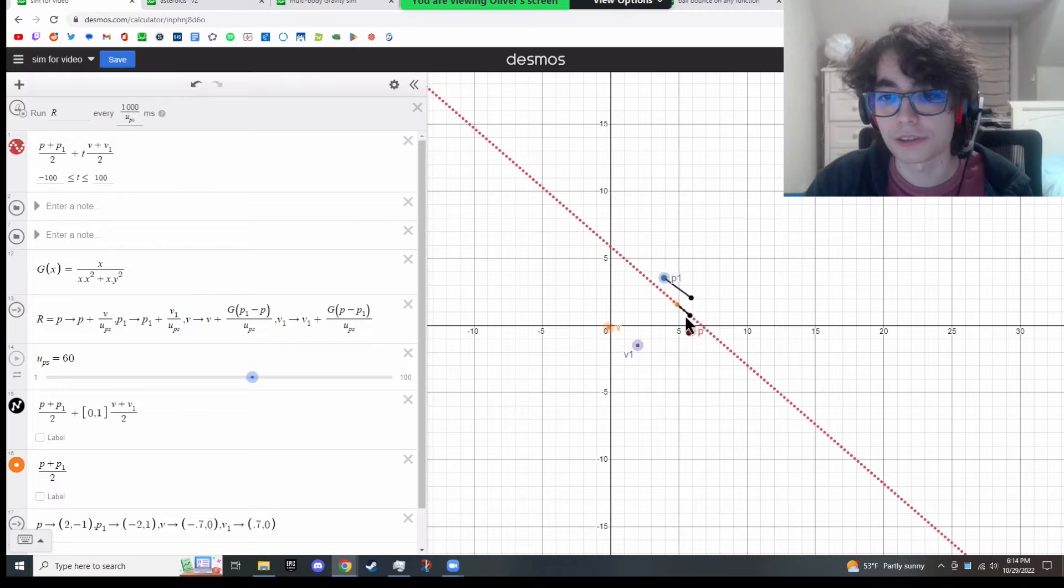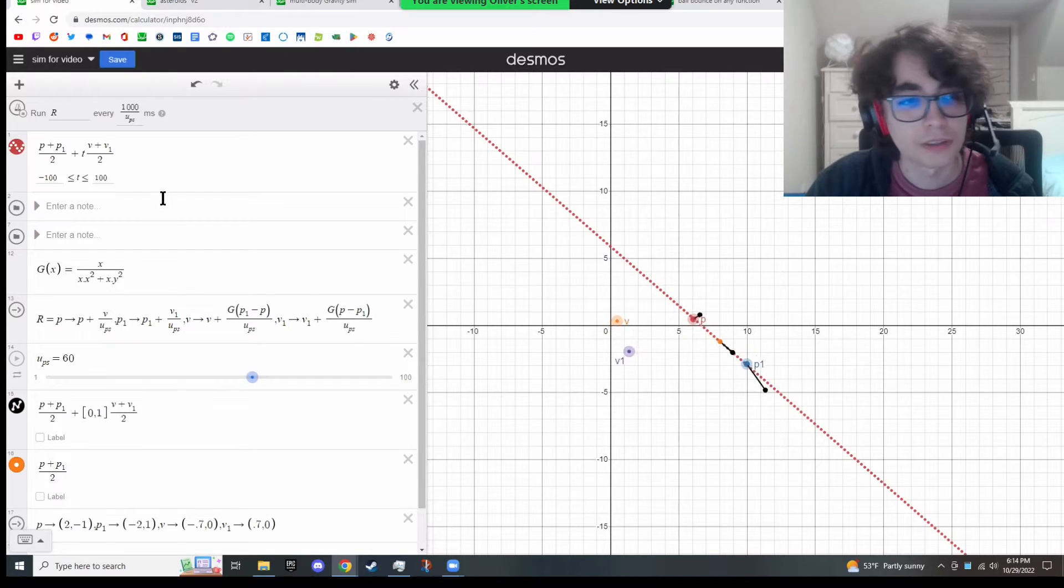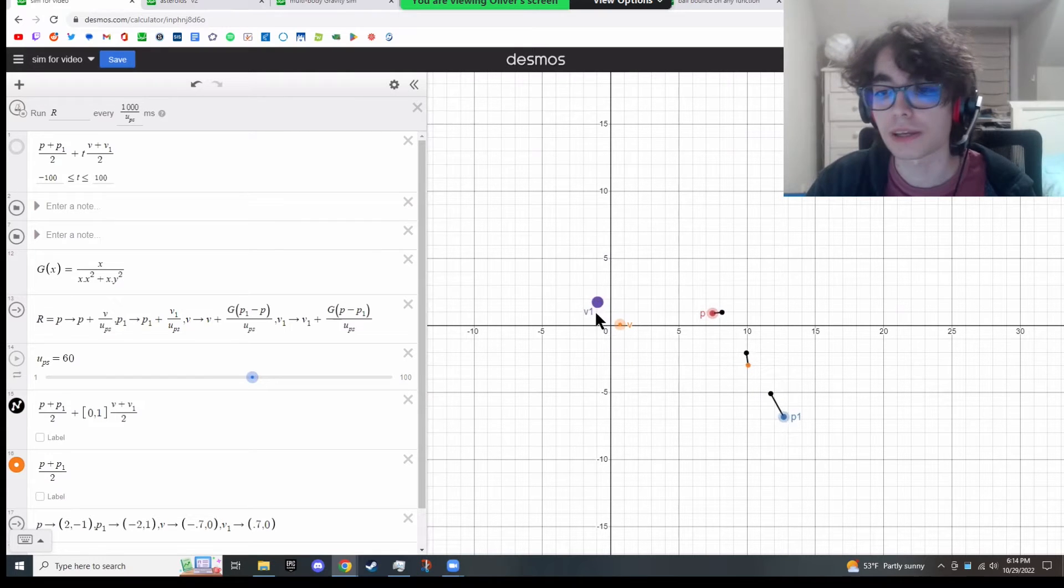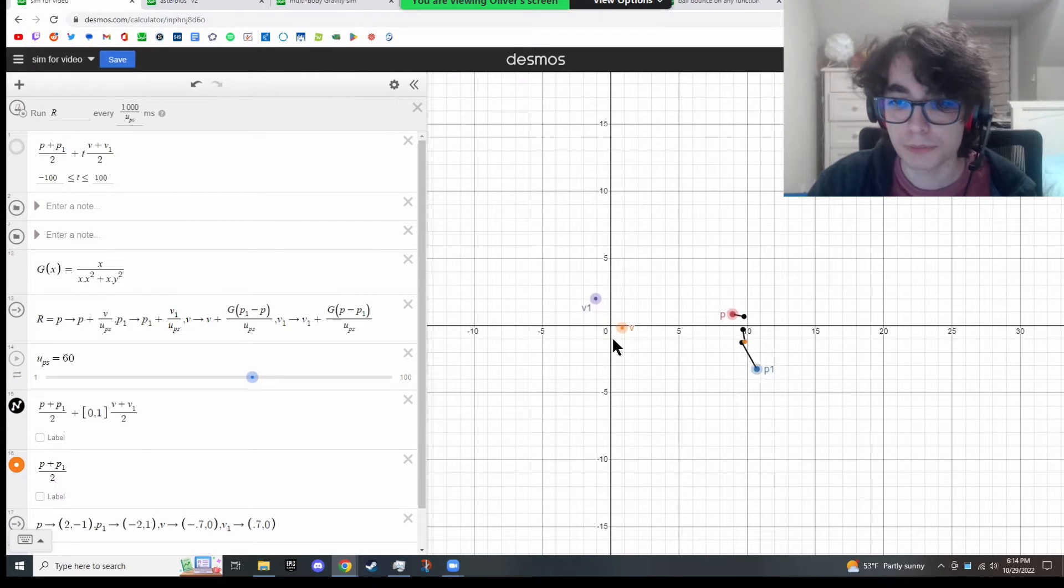I can draw a line here and you can see that average position just perfectly follows it. And so I think this is a pretty accurate way of doing some physics simulations.